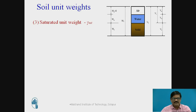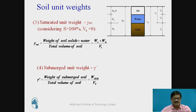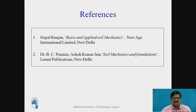Next is saturated unit weight. Saturated unit weight means all the voids are filled with water, so degree of saturation is 100% and there is no air. Saturated unit weight is the weight of soil solid plus water divided by total volume of soil. The next unit weight is the submerged unit weight — when the soil mass is in a submerged condition, it is the ratio of weight of submerged soil divided by total volume of soil. These are the various unit weights of soil mass expressed with respect to the three-phase system.